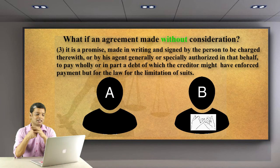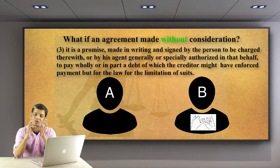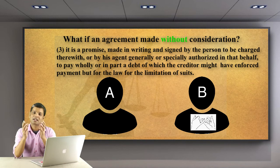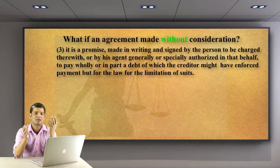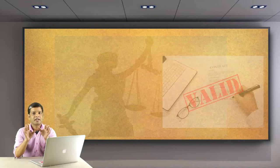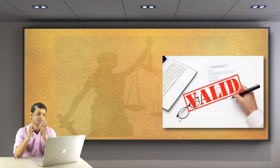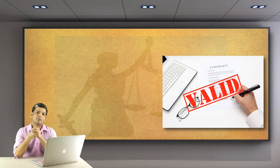Focusing on these three provisions, only the first one — the gift based on natural love and affection — has no consideration. In the subsequent two exceptions, there are considerations present, though performed in some way or another, in the present or in the past. This is the exception to the valid contract without consideration.